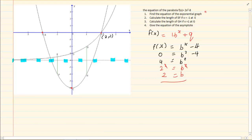That is the equation of the exponential graph. We have to rewrite it. So we have f of x is equal to 2 to the power of x minus 4.